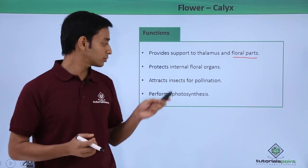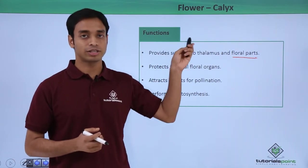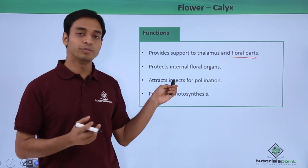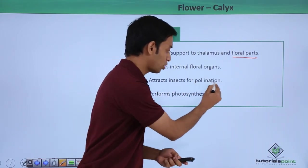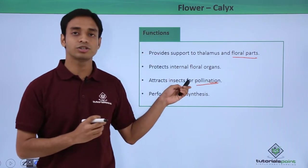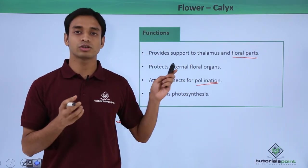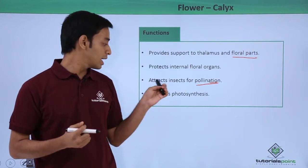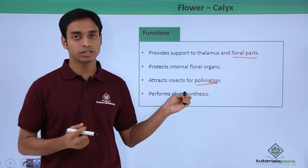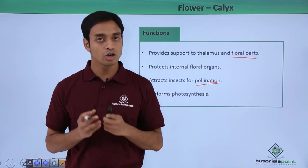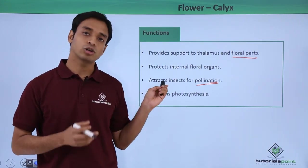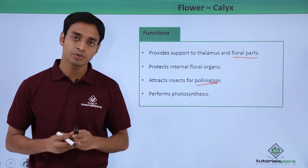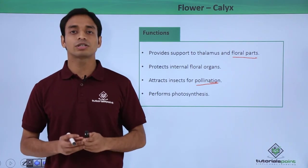The calyx also protects the internal floral organs like the ovary and ovules. Very importantly, some sepals or calyx can be colorful other than green, which attracts insects for the process of pollination — needed for sexual reproduction. The calyx can also perform photosynthesis because it is green and has the presence of chlorophyll, playing an important role in making food for the plant.